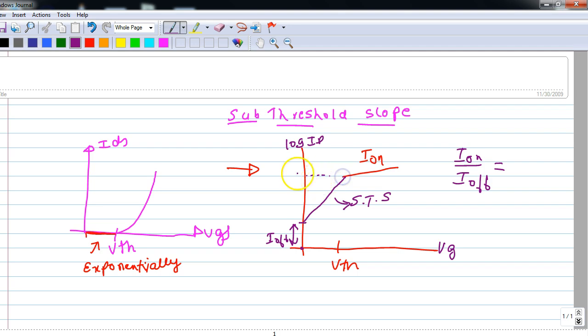Let us assume that the on current is somewhere in milliamperes. This can be the off current, let's say it is in some nanoamperes. Then the Ion to Ioff is 10 to the 6, which is actually a very good number.